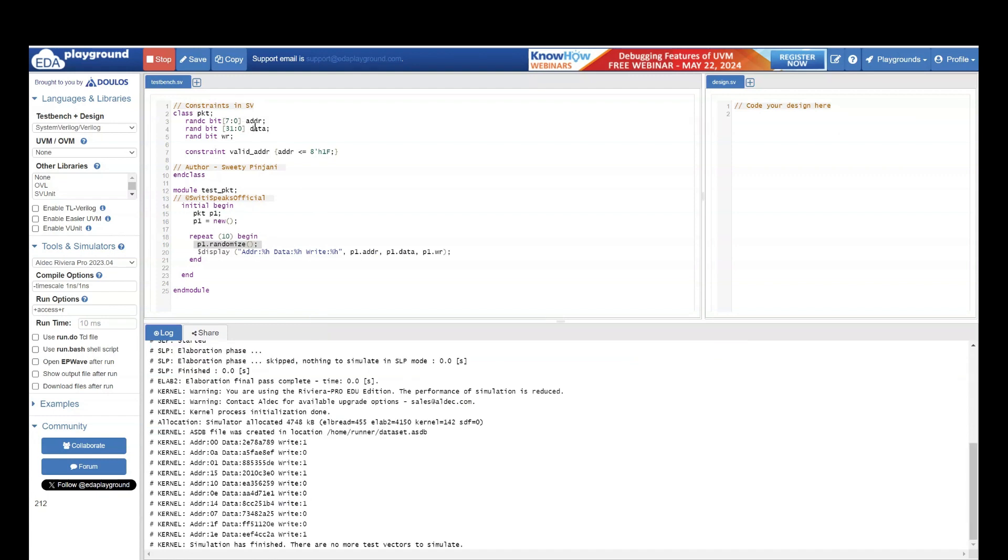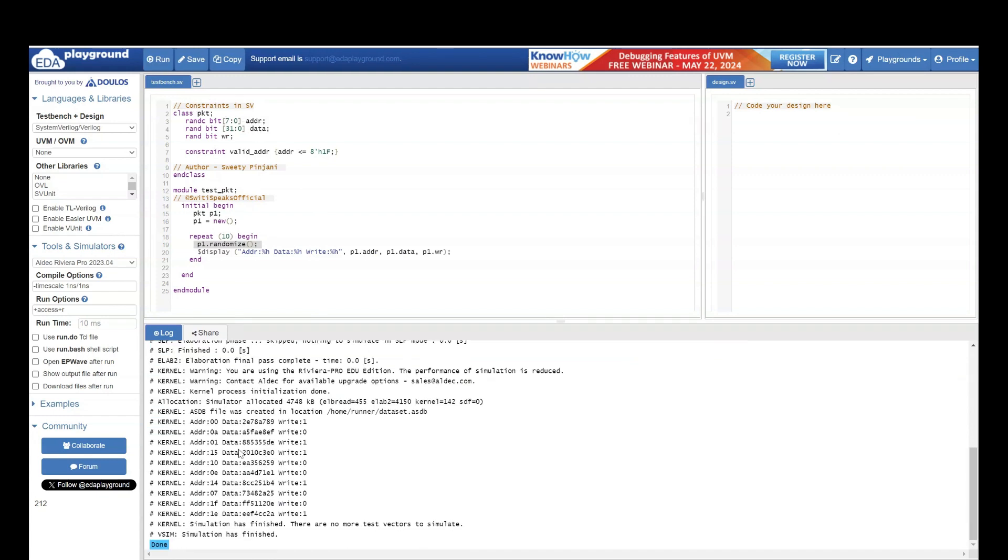Just remember all my bits are randomized. So if you see all the bits are randomized. Data is 32 bit, write is 1 bit. I don't have any constraints on data and write. Address is randc, which means the value should not repeat until all the values are covered. And also the value should be within 1f. Let's focus on address. None of the values are repeating as of now. Because we have only repeated 10 times and the valid values are more than 10. That's why none of the values have repeated.